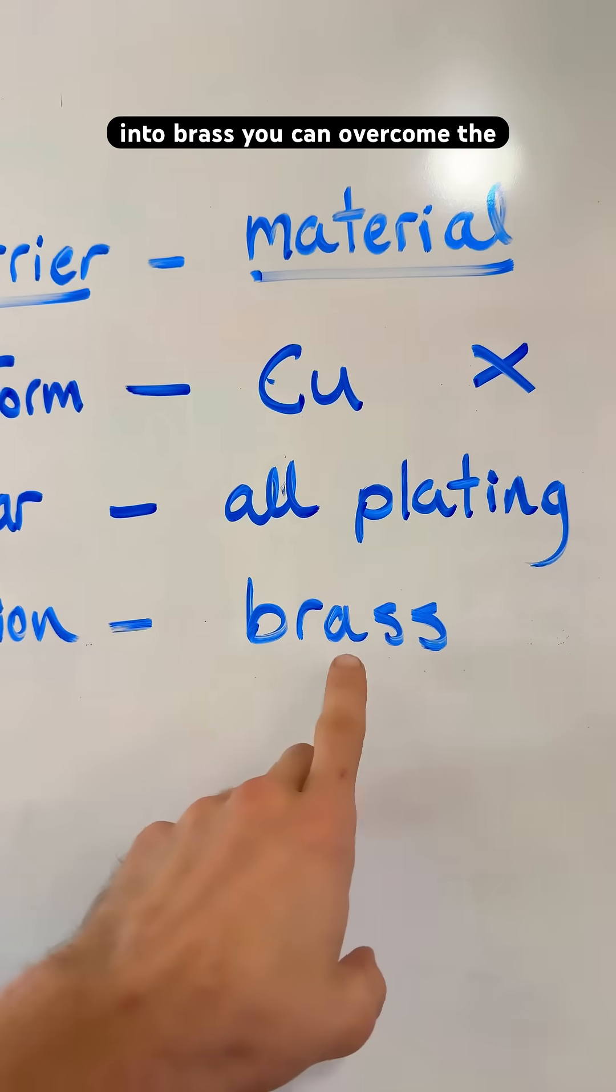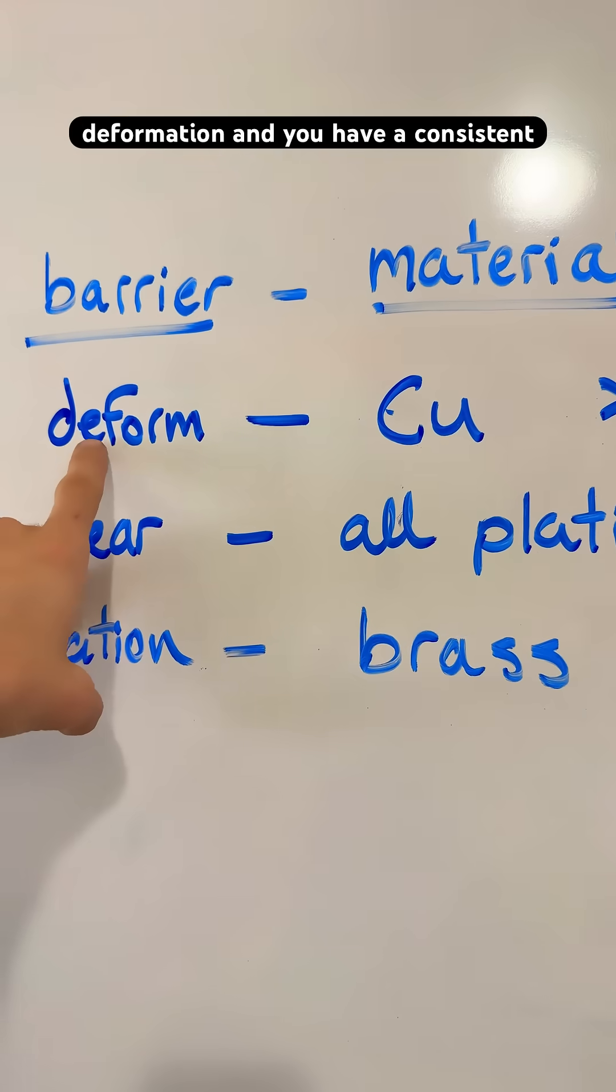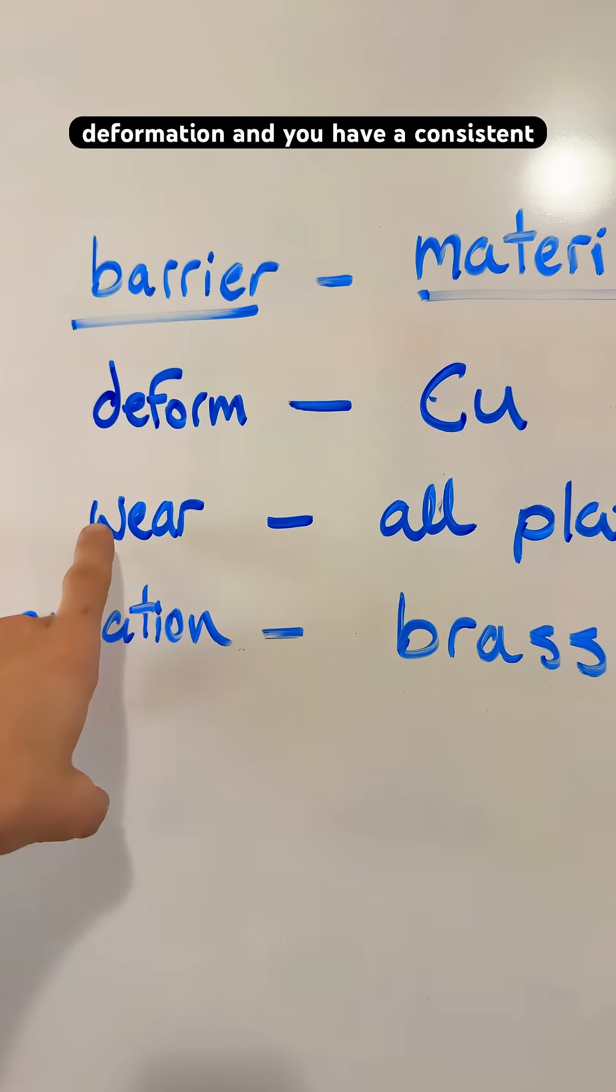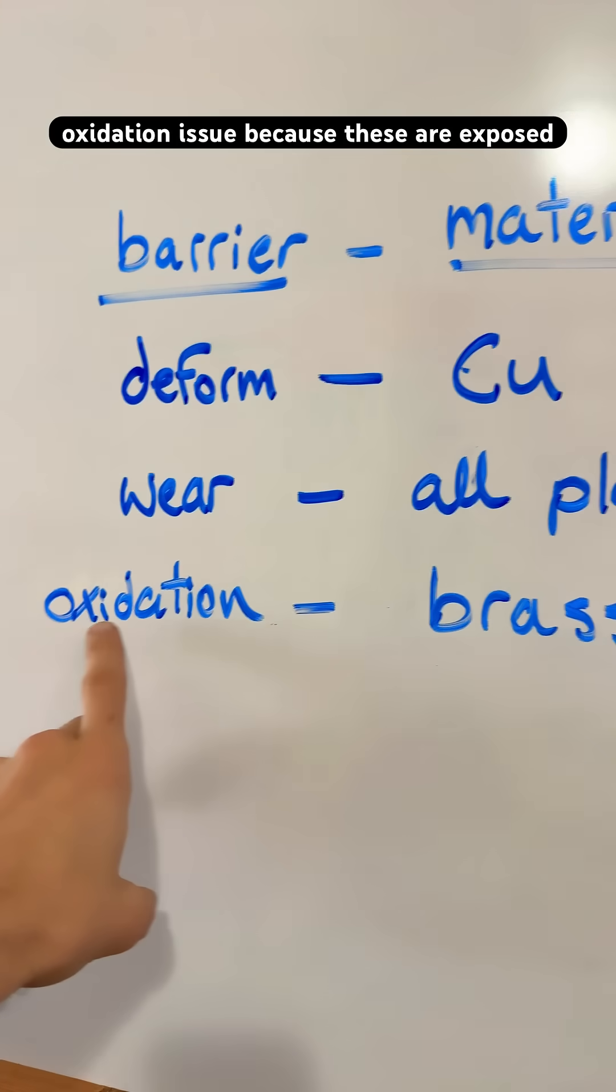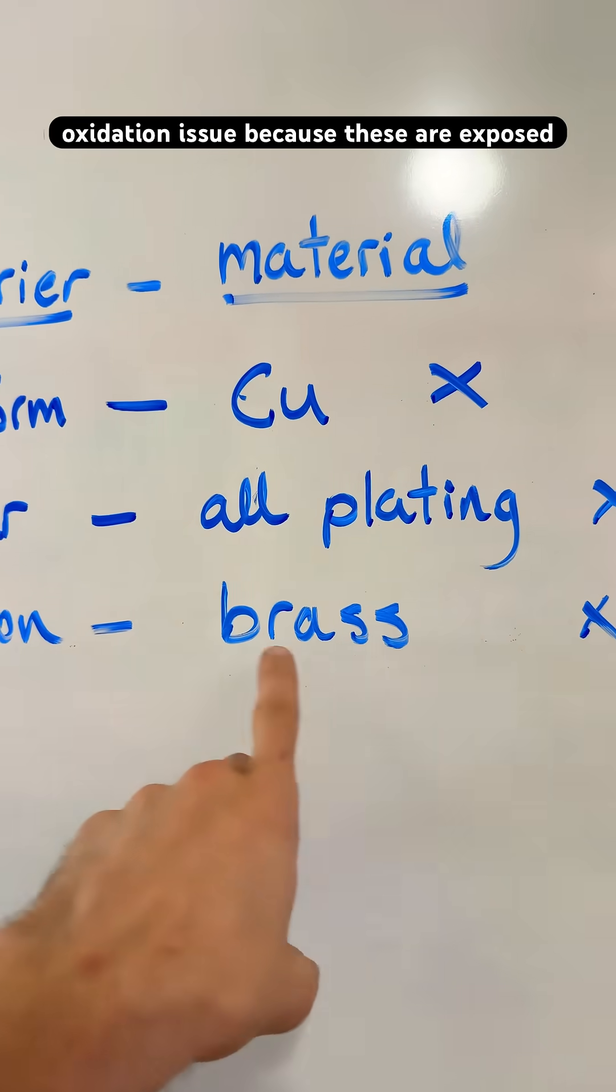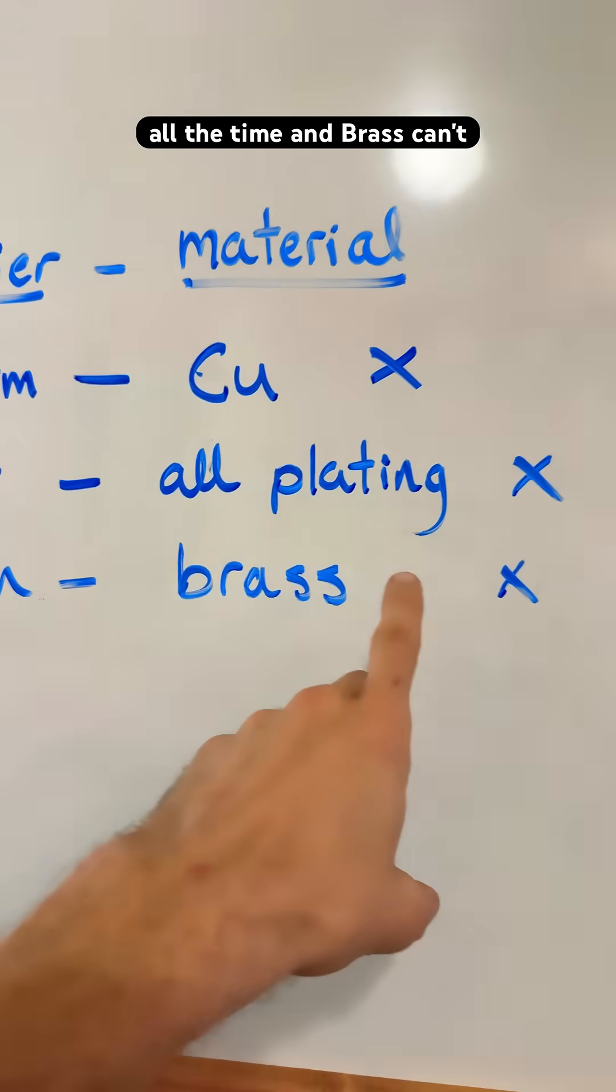If you alloy the copper into brass, you can overcome the deformation and you have consistent material throughout, no plating to wear on. But then you have the oxidation issue because these are exposed all the time and brass can't withstand it.